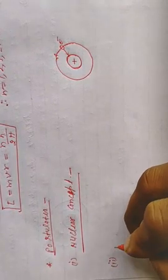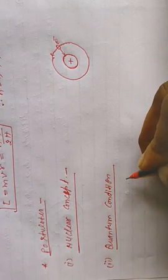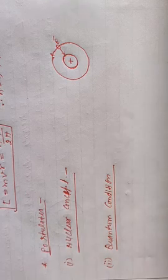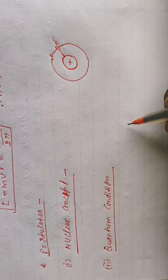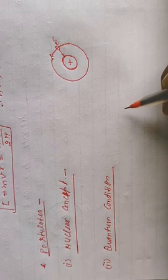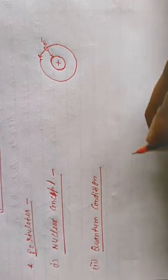Second postulate है quantum condition। Quantum condition में यह था कि electron उन्हीं circular orbits में revolve कर पाएगा जिनके पास angular momentum nh upon 2π हो।